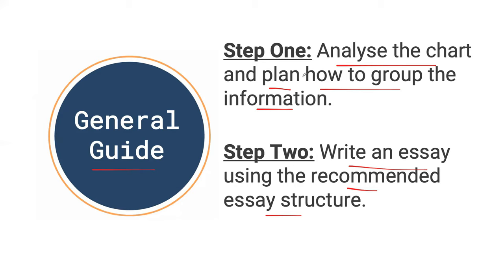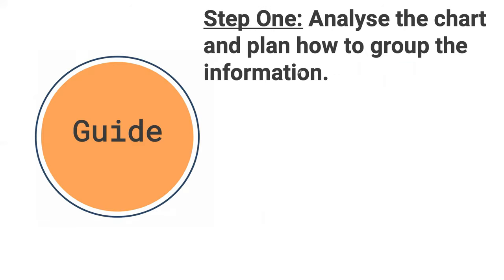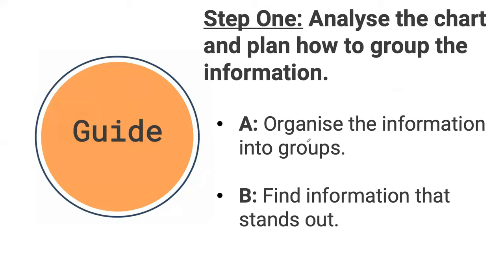Let's look at step one in detail. First, we're going to organize the information we see in our bar chart into groups — most likely two groups. Then we're going to find information that stands out, something that is perhaps surprising, like a huge decrease or a sharp increase. Remember, these function as line graphs, so I'll show you how that plays into this.